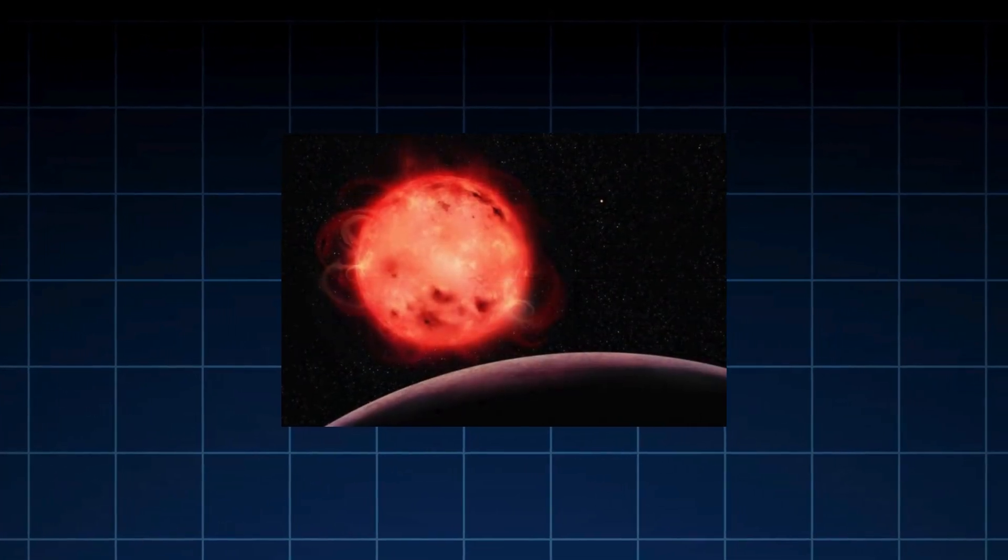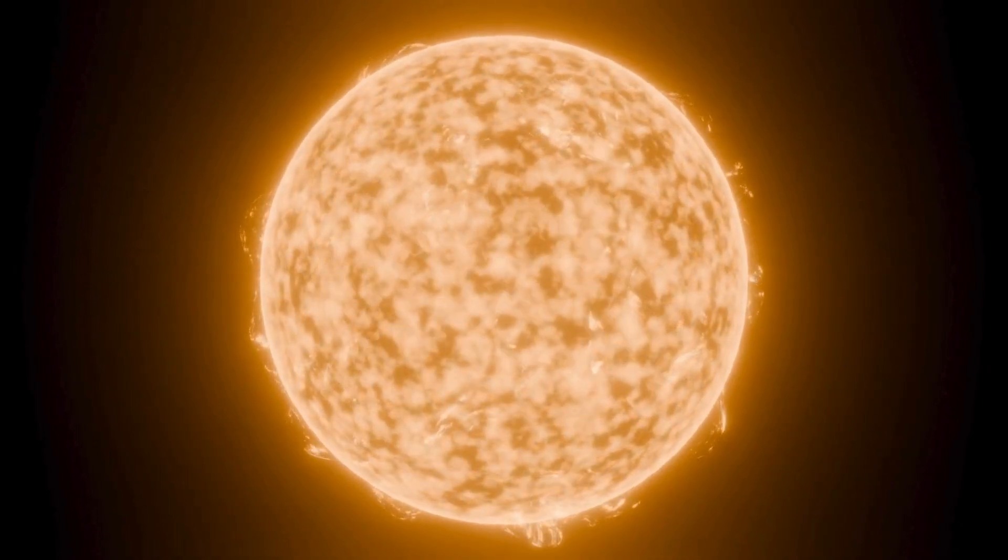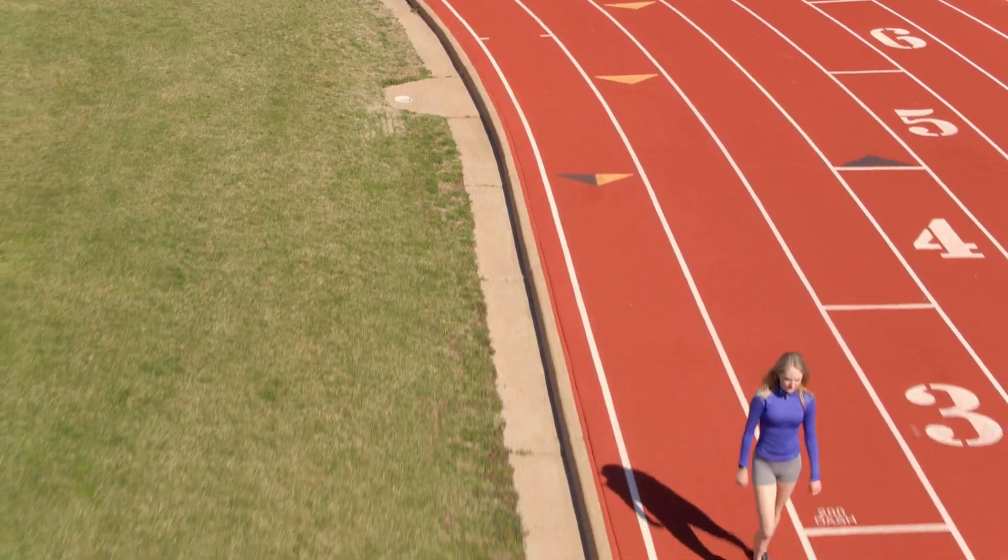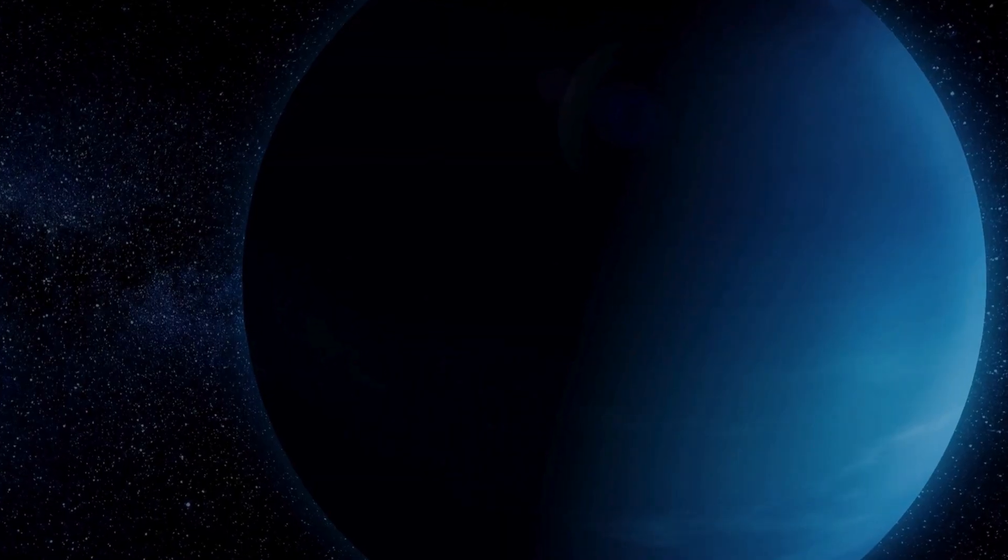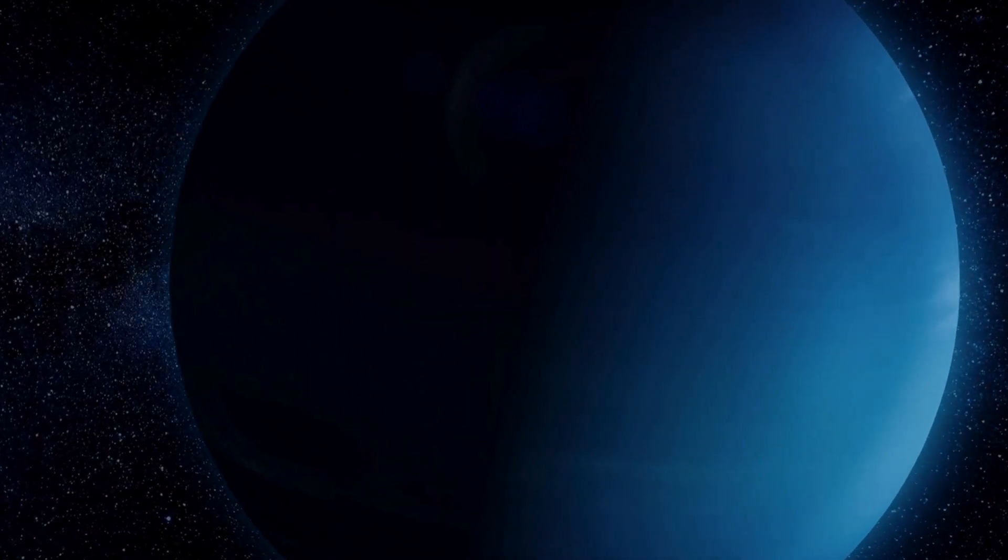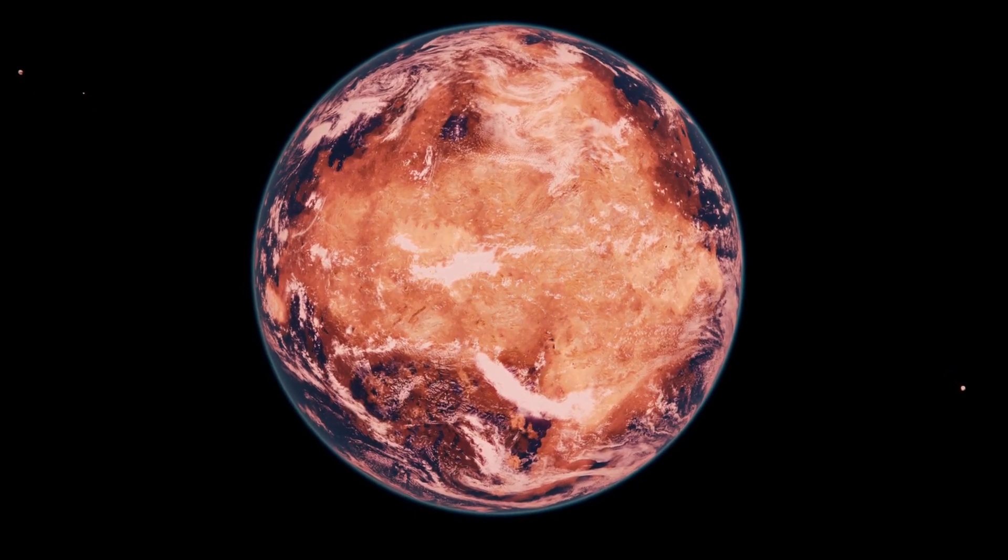TRAPPIST-1 is an M8-class red dwarf, only a little larger than Jupiter. It's 1,800 times less luminous than our Sun, a difference like comparing a candle to a college running track floodlight. Although the star was first discovered in 1999, its full planetary lineup wasn't revealed until 2017.